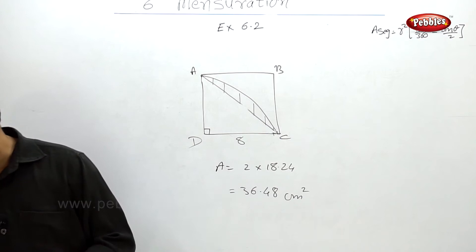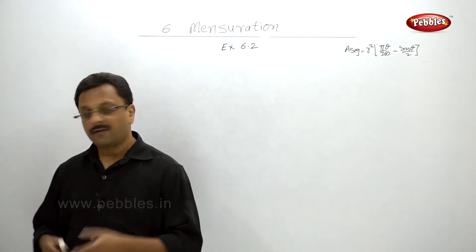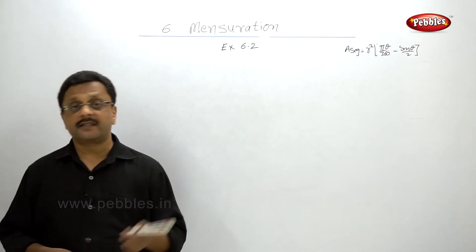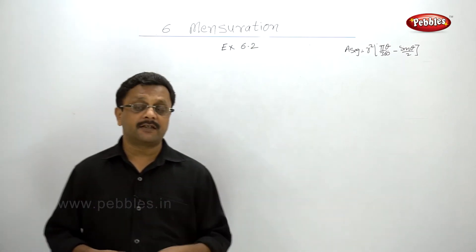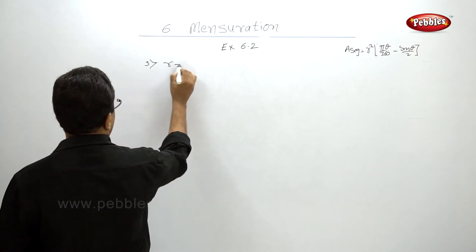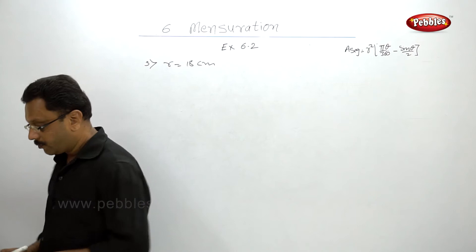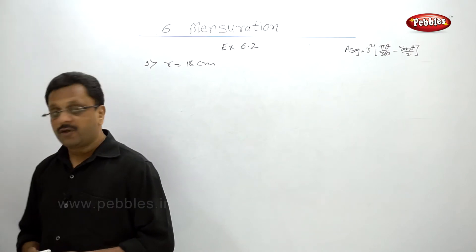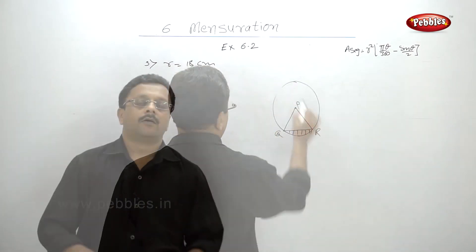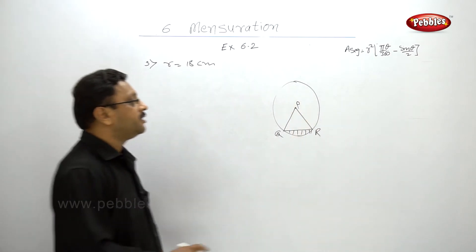Let us go to the next example. In this case, one segment figure is given. The center of the circle has radius 18 centimeters.